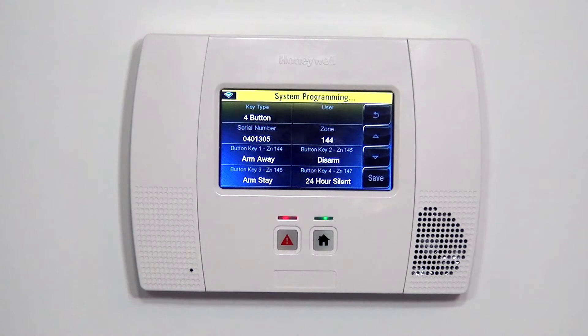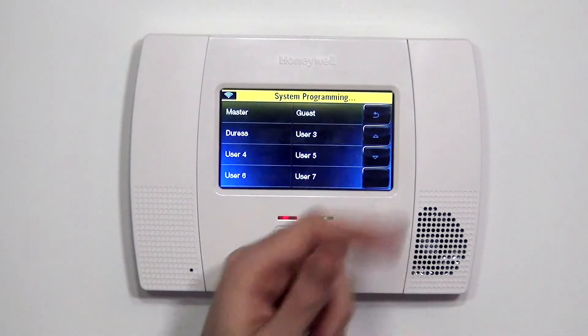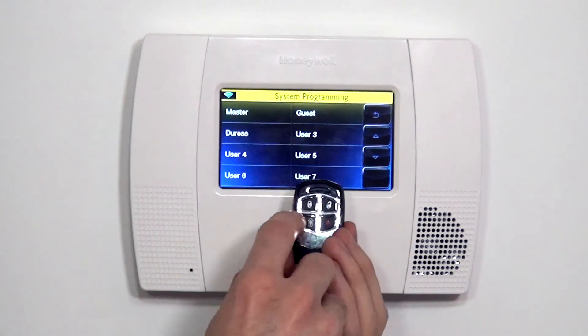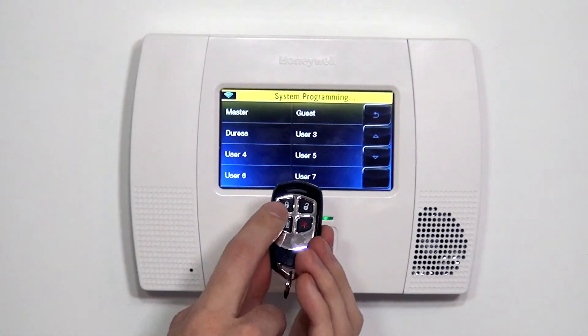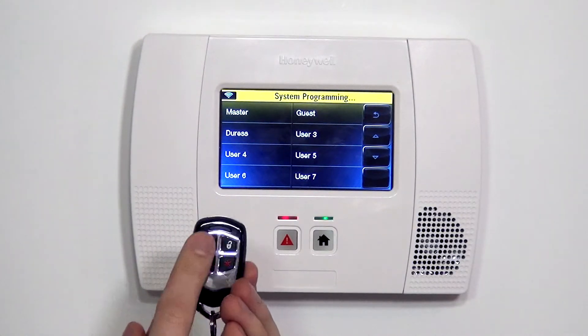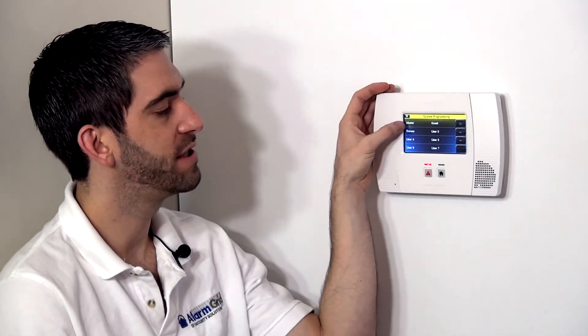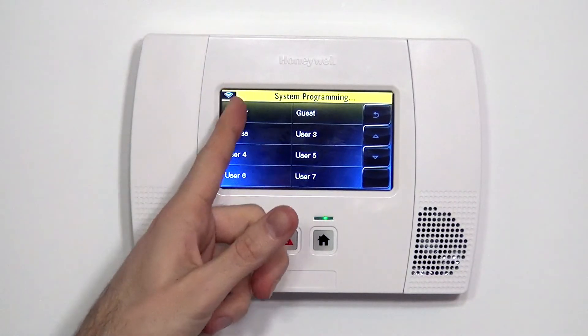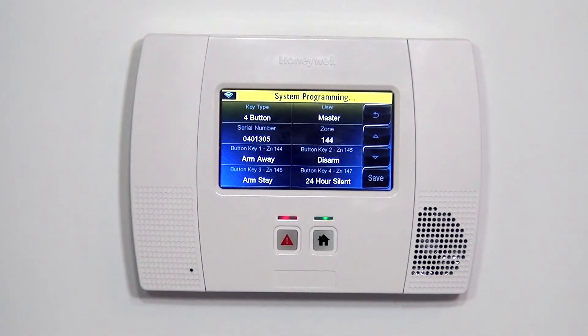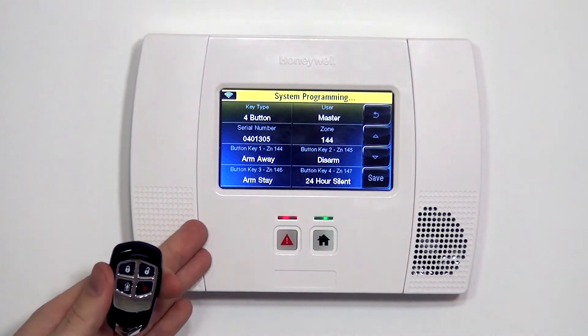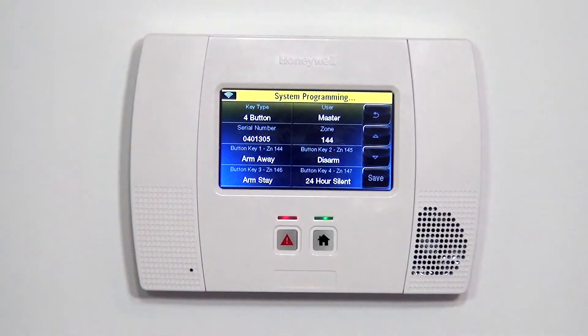The last thing we have to do before we save our settings is to select the user code for the key fob. The key fob, even if the programming is right with the serial number and the button programming, the buttons won't do anything when arming or disarming unless they're mapped to a valid user code in the panel. Our master code is the only code we have set, it's code number 1234, which is the default, and we just want to assign it to the master. When this fob is used to arm or disarm, the panel will respond and will report that it was the master key or the master user that armed and disarmed.